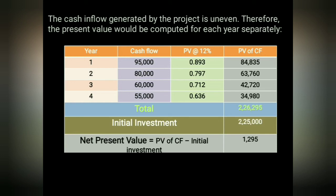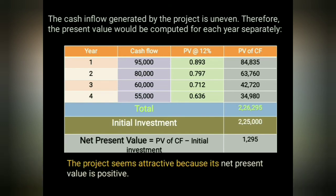We then make a decision: since NPV is greater than zero (NPV = 1,295, which is positive), we accept the project. If NPV were negative, we would reject the project.